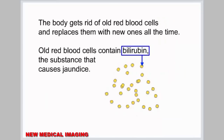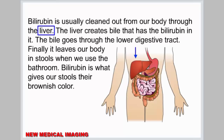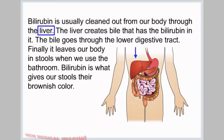The body gets rid of old red blood cells and replaces them with new ones all the time. Old red blood cells contain bilirubin, the substance that causes jaundice. Bilirubin is usually cleaned out from our body through the liver. The liver creates bile that has the bilirubin in it. The bile goes through the lower digestive tract and leaves our body in stools. Bilirubin is what gives our stools their brownish color.